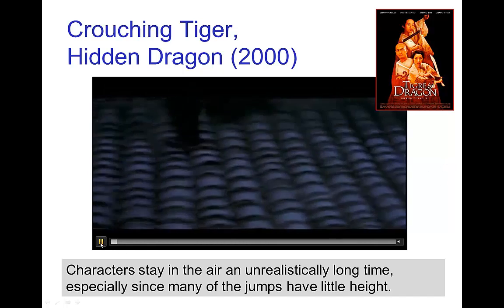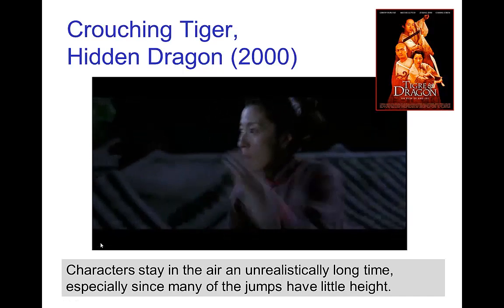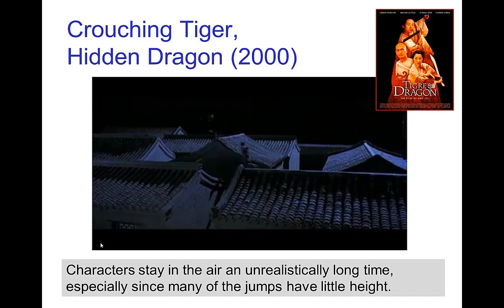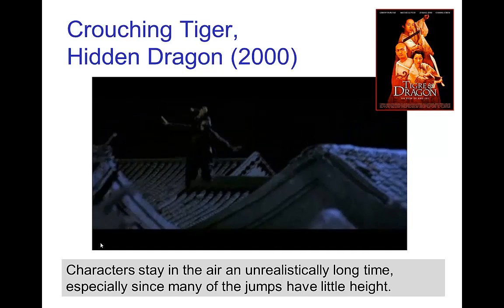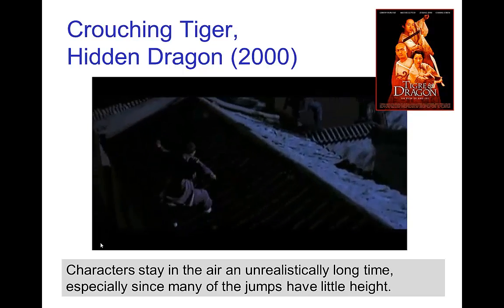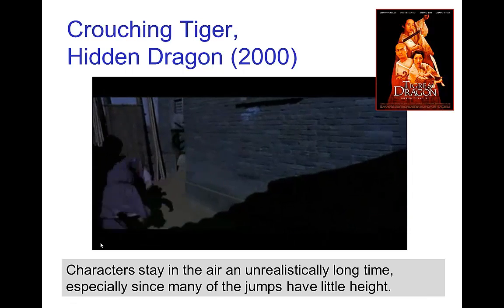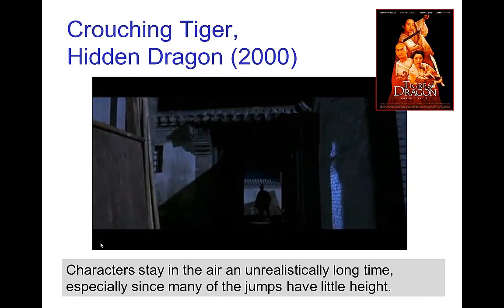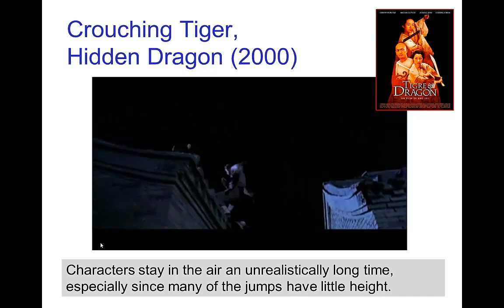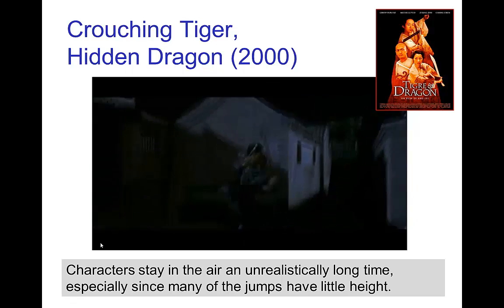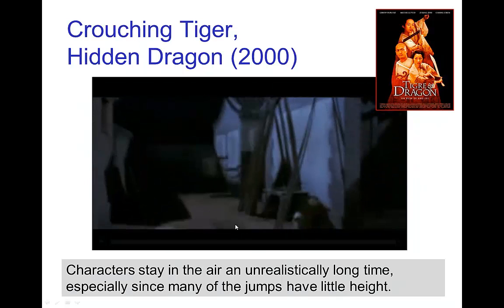Here's a scene from Crouching Tiger, Hidden Dragon and you can notice that in the scene the time in the air is significantly longer than you would find in realistic jumping. The characters, even though their jumps don't rise very high, they spend a lot of time in the air. The reason is that this was filmed using wire work. So the actors here are being supported by wires and held up in the air much longer than they would be in a normal jump.